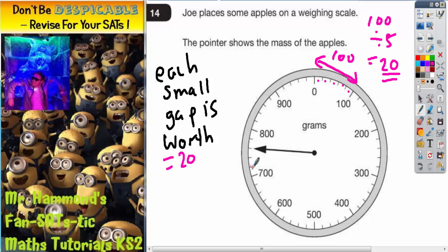So each little gap is worth 20. So this first one after 700 would be 720, 740, 760. So that arrow is pointing to 760 grams.